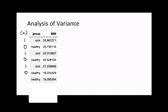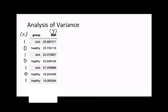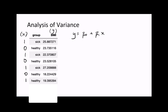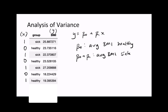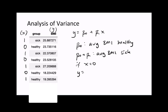We'll replace the sick labels with 1s and the healthy labels with 0s, and denote the body mass index with variable y. If we want to quantify the difference in body mass index between these two groups, we can use linear regression of the form y equals beta0 plus beta1 times x. We can tune the intercept beta0 and the slope beta1 to get the best model fit.